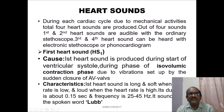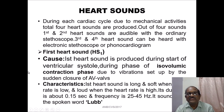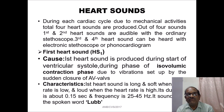Let us look at the first heart sound. These heart sounds are represented by the letters HS followed by a number — HS1 means the first heart sound, HS2 means the second heart sound, and so on. What is the cause of the first heart sound? The first heart sound is produced at the start of ventricular systole, during the isovolumic contraction phase, due to vibrations set up by the sudden closure of the AV valves. Its characteristic: the first heart sound is long and soft when heart rate is low, and loud when the heart rate is high. Its duration is about 0.15 seconds and frequency is 25 to 45 hertz. It sounds like the spoken syllable 'lubb'.